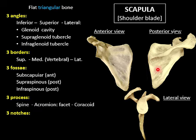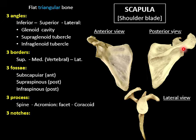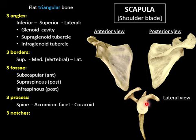There are three processes. The spine is a shelf-like process that ends in a large flattened process called the acromion, which carries a facet for the clavicle. The second process looks like a bent finger and is called the coracoid process.